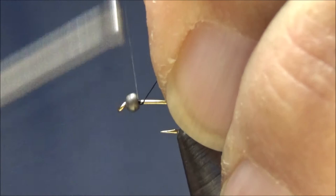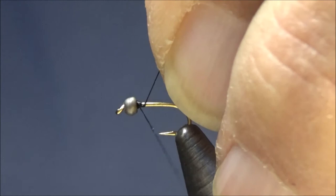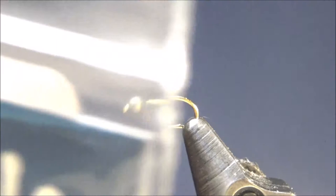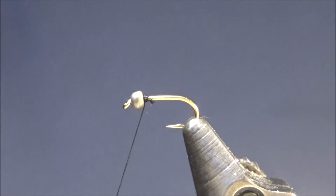Start the thread behind the bead, lay a base so the bead doesn't move, and clip that. For the body, I'm going to be using a Wapsi stretch tubing. This is in blood red, size micro. It can also come in red. For this particular pattern, I am going to be using the blood red.